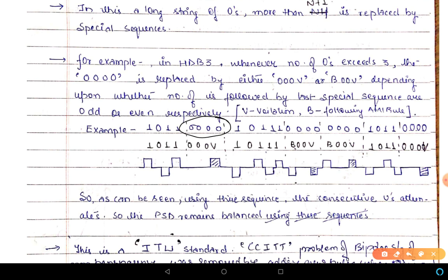Each group of four consecutive zeros is to be replaced by a special sequence — either '000V' or 'B00V'. For the first group of four zeros, we have chosen the default sequence '000V'. We can also use 'B00V' — there is no specific rule for the very first occurrence.